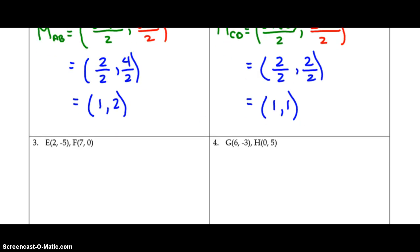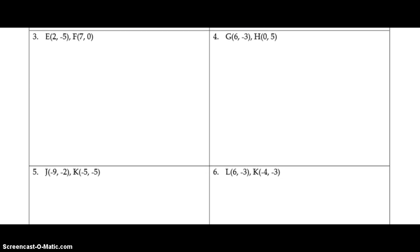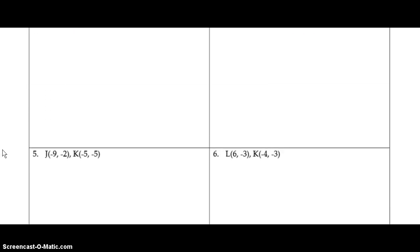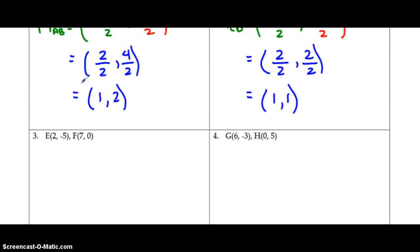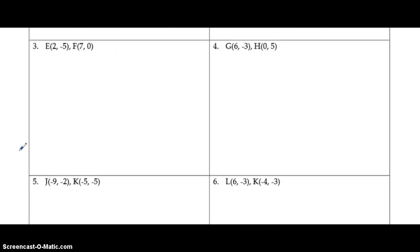What I am going to get you to do is to stop the video. Try examples 3, 4, 5 and 6 on your own. Remember that you should have brackets around your coordinates and you should put your answers as fractions in lowest terms. Once you have finished 3, 4, 5 and 6, you can go ahead and play the tape to check your answers. So, stop the tape here and try these 4 questions on your own.